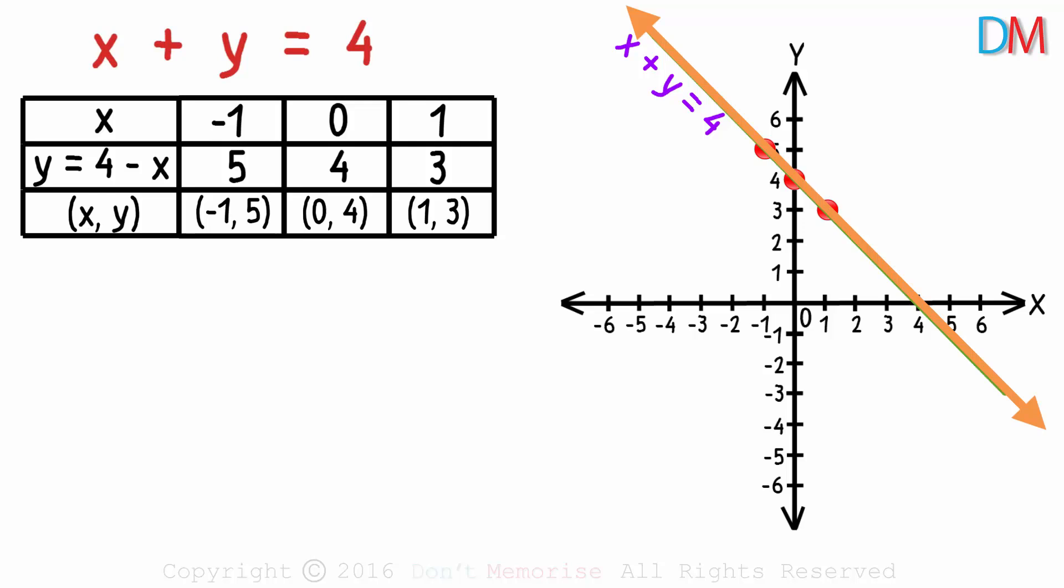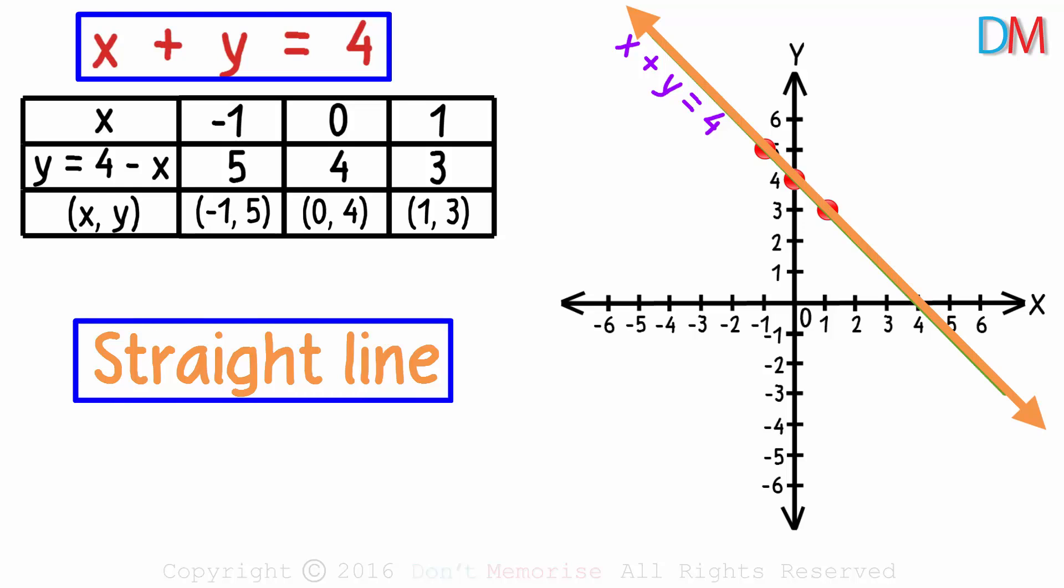The graph of a linear equation in two variables will always be a straight line. No matter what linear equation you pick, its graph will always be a straight line.